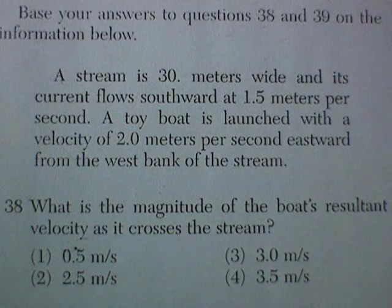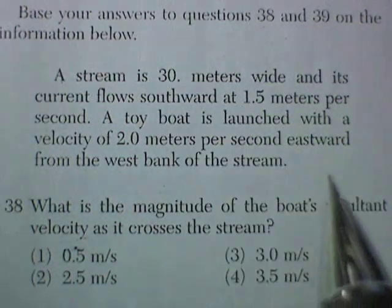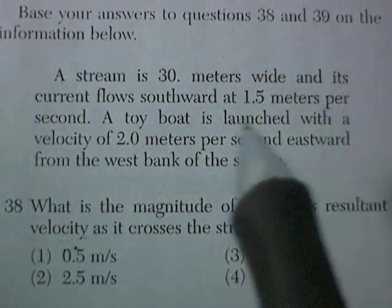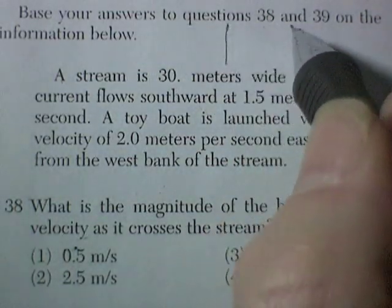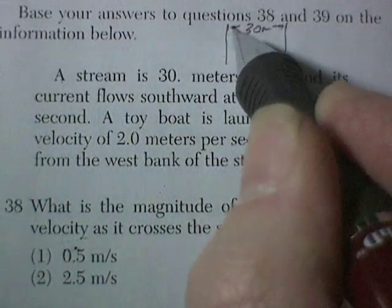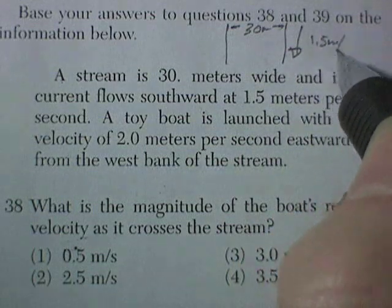Questions 38 and 39 depend on the information here. A stream is 30 meters wide. And its current flows southward at 1.5 meters per second. So here would be the river. About 30 meters wide. And the current is flowing southwards at 1.5 meters per second.